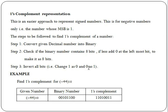Here is the One's Complement representation. The first step is to represent the negative value by converting the decimal number to binary. Once you have the binary number, you convert all the bits — flipping each bit from 0 to 1 and 1 to 0.